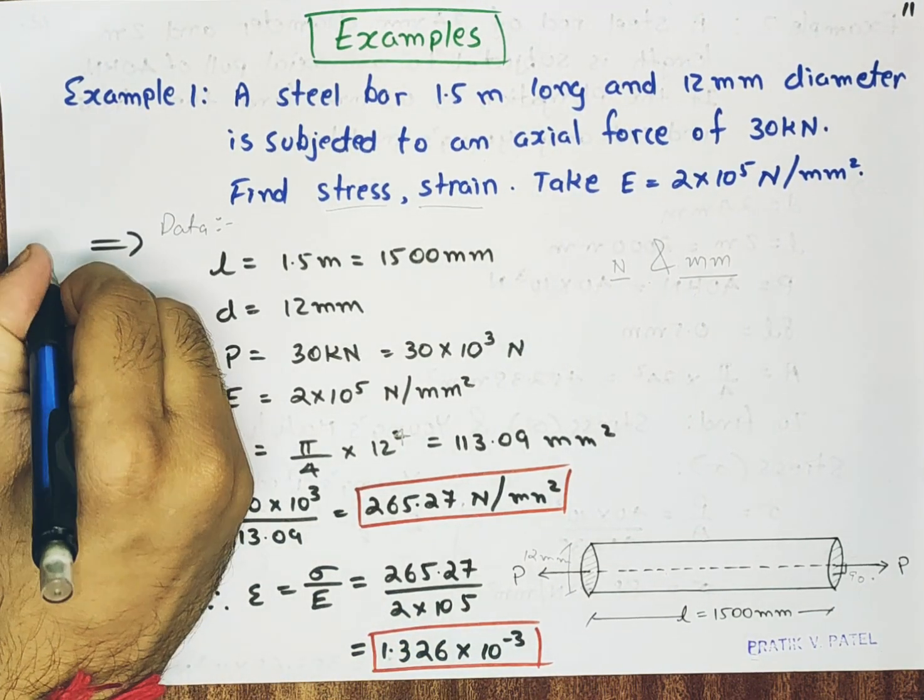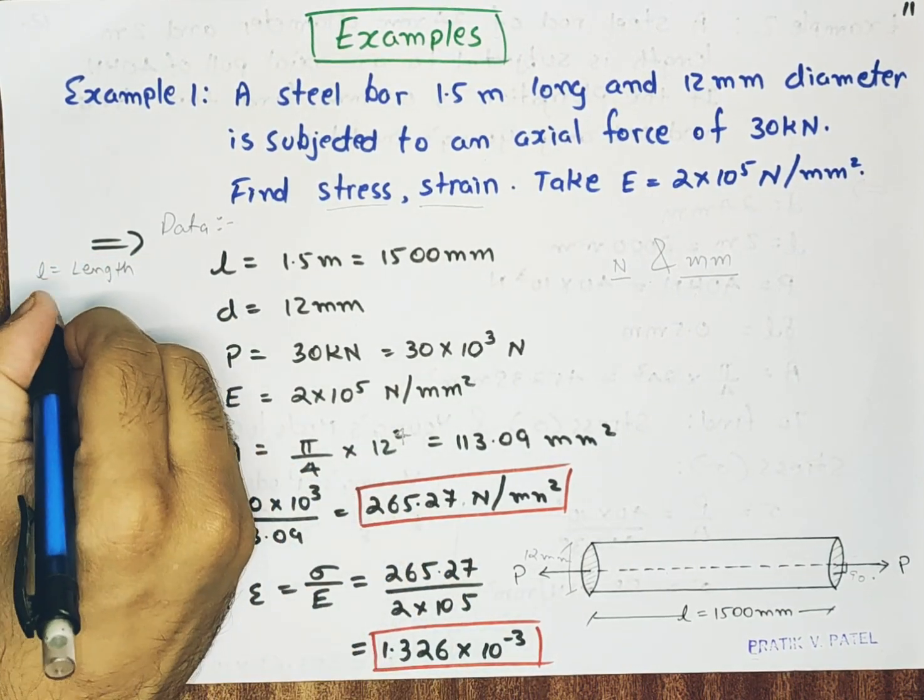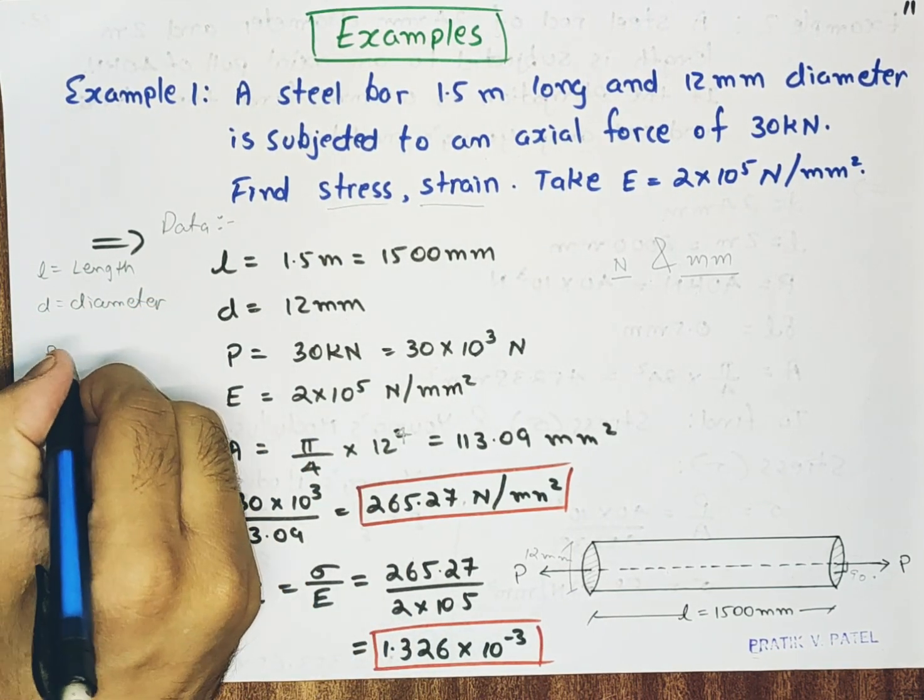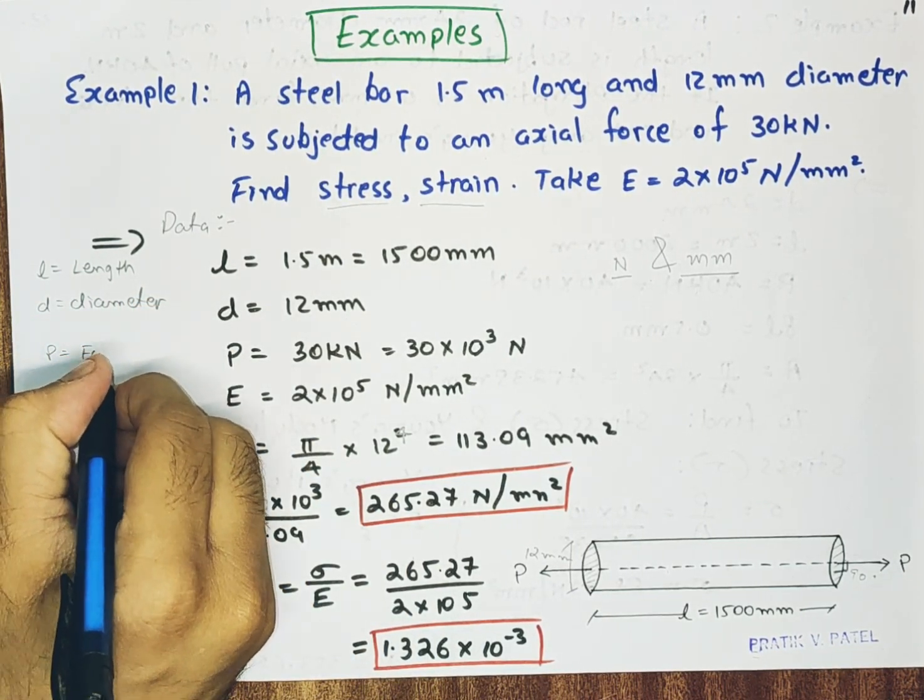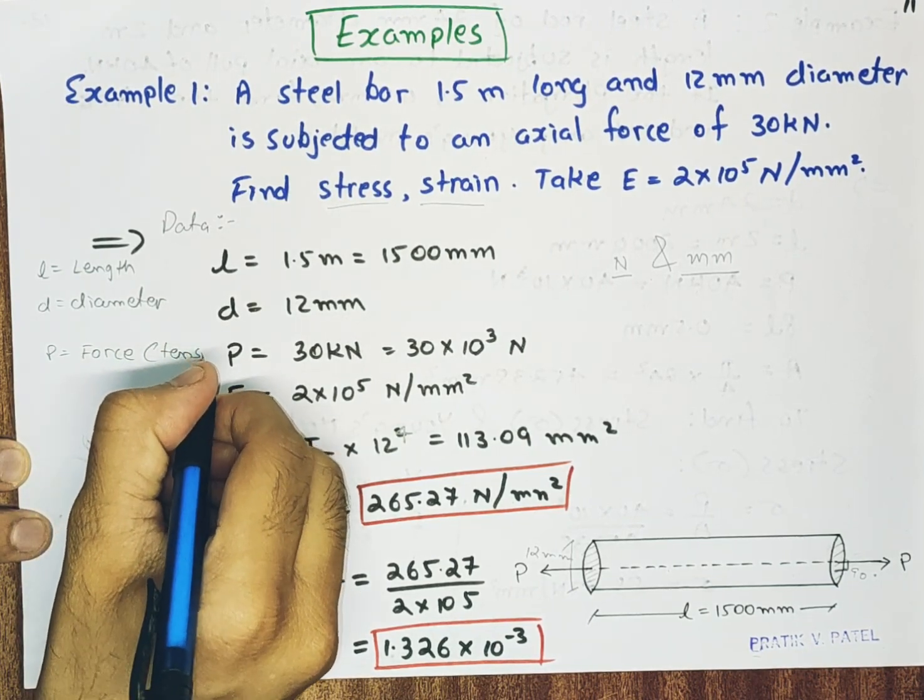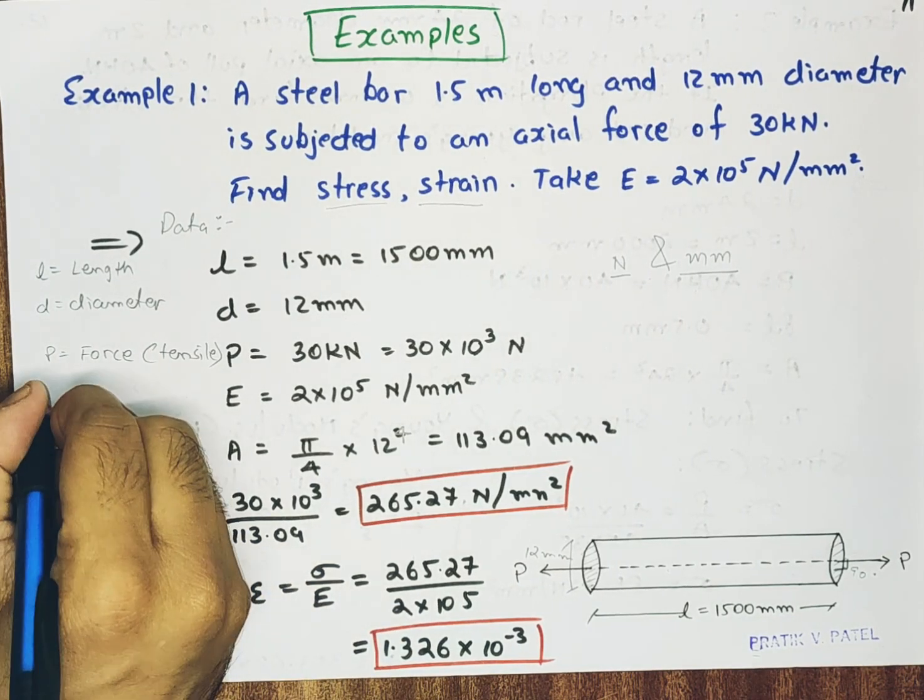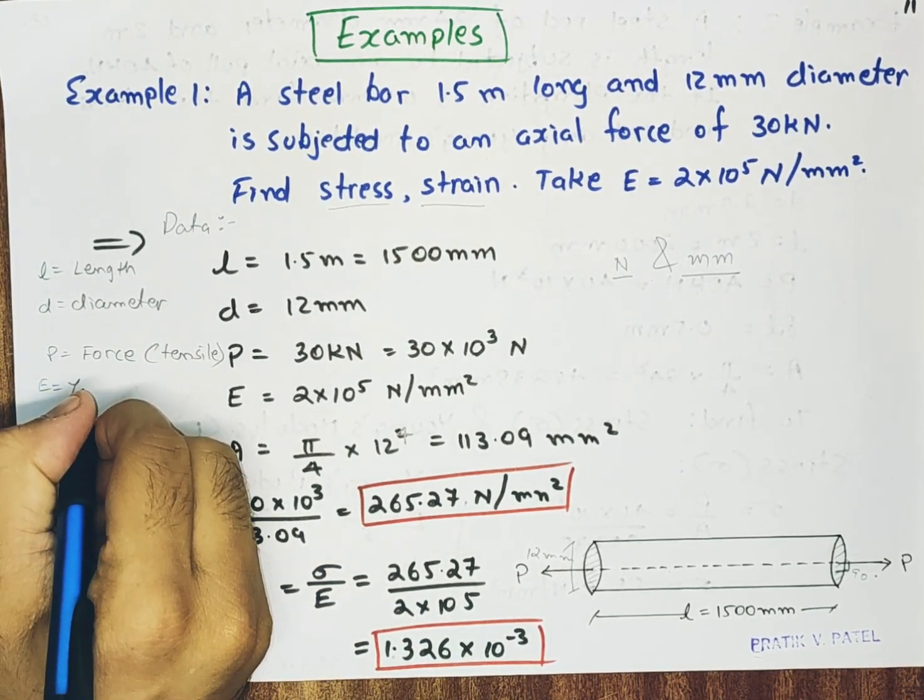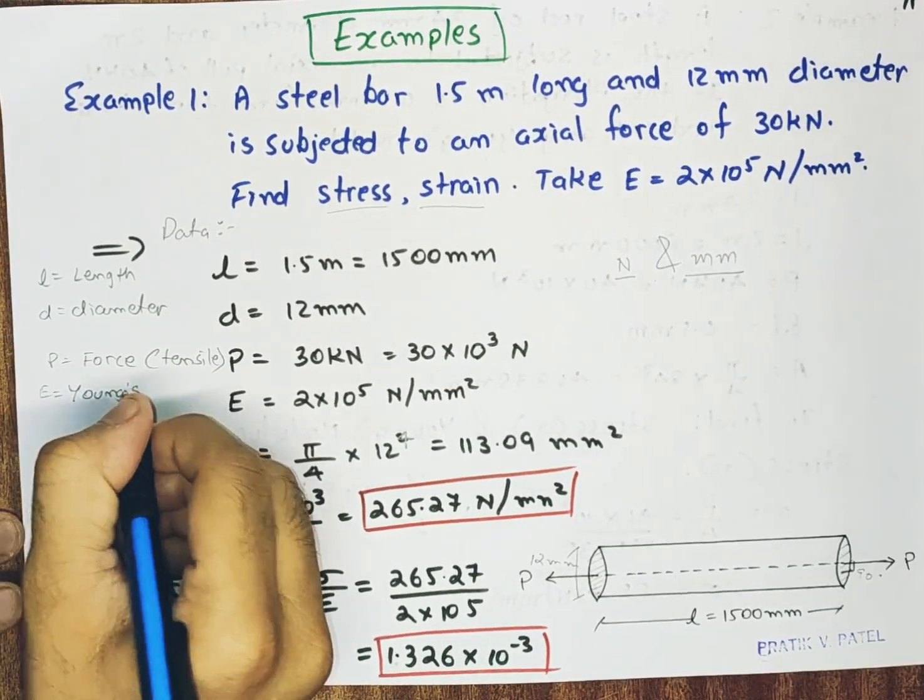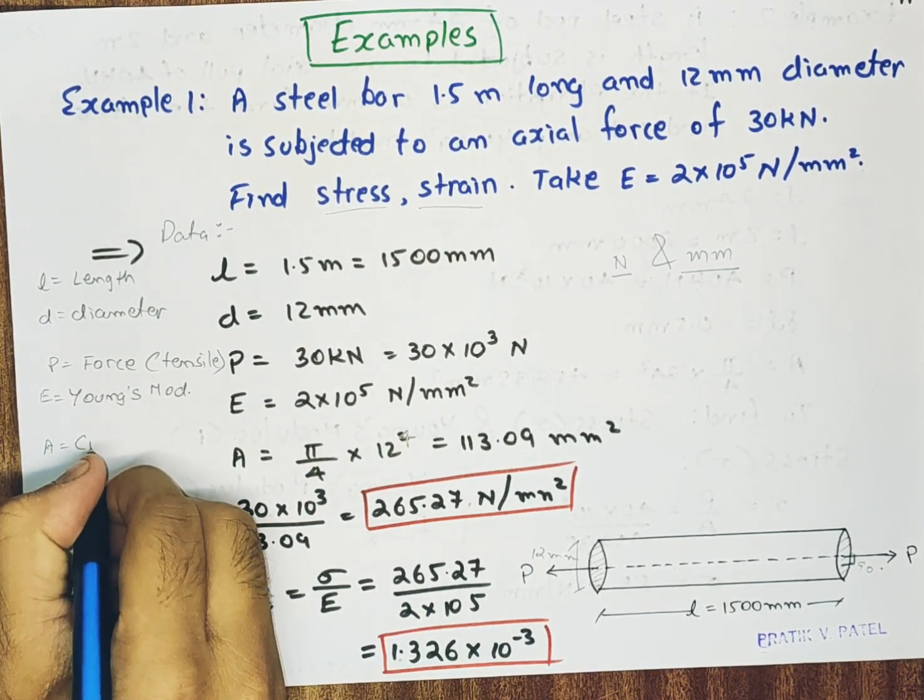So let me write down here. L is equal to length. D is equal to diameter. P is equal to force. Tensile. Here we have assumed tension. E is equal to Young's modulus and modulus of elasticity. A is cross sectional area.